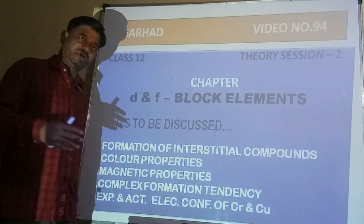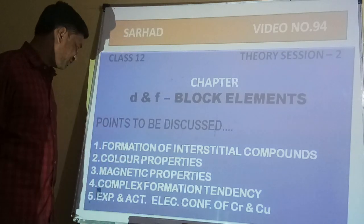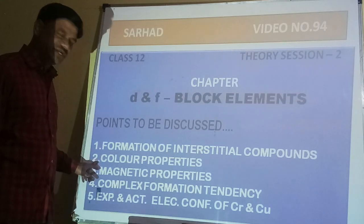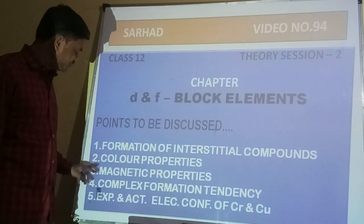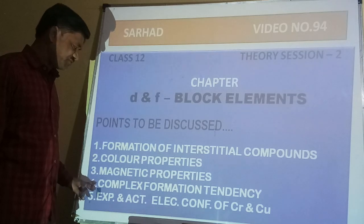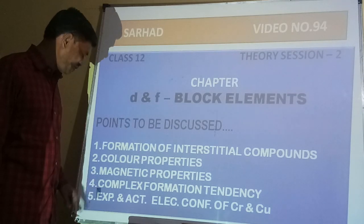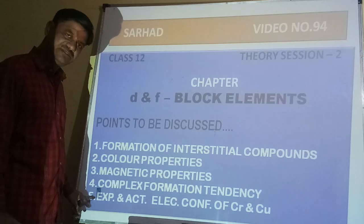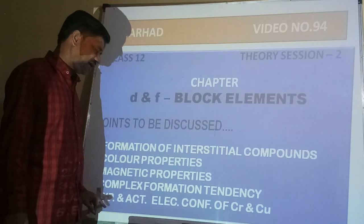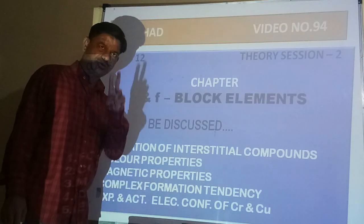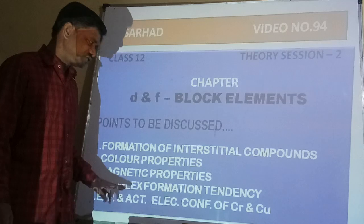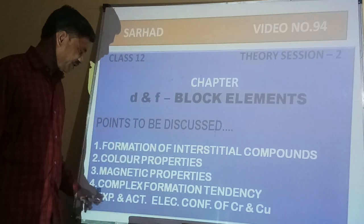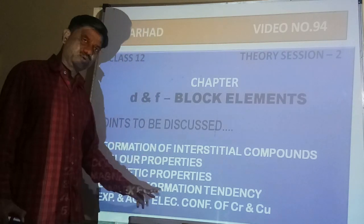In today's session, we are going to continue these properties: formation of interstitial compounds, then colour properties, magnetic properties, complex formation tendency, and lastly, the expected and actual electronic configuration of two elements, Cr and Cu — meaning why there is a difference in expected and actual configuration.